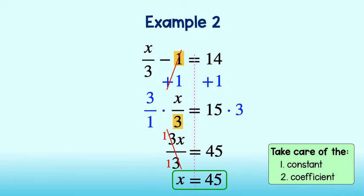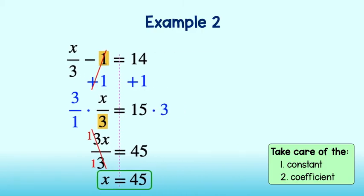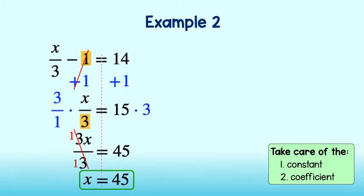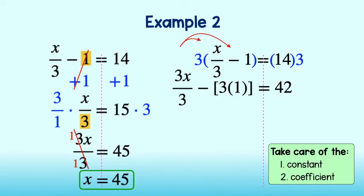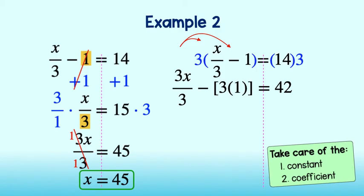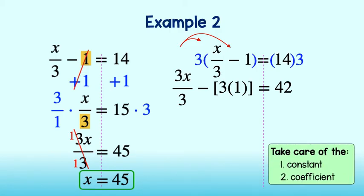You'll want to make note that in both of our examples, we took care of the constant first and the coefficient second. This is because when we manipulate an equation, we must manipulate the entire side of the equation. If instead we would have multiplied by 3 first in the last example, we would have multiplied 3 by the fraction and the 1. This is possible, but it makes our equation unnecessarily messy. Therefore, as a general rule of thumb, we will try to get rid of the constant first and the coefficient second.